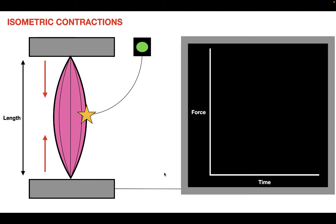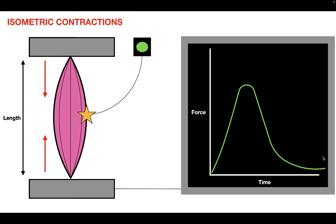The force that's generated can be seen here, where the force increases over time until it gets to a maximum point, and then it drops off as the muscle relaxes. So an isometric contraction is a contraction in which the muscle length remains constant during the length of the contraction. These contractions are incredibly important to understand in order to understand the Frank-Starling curve.